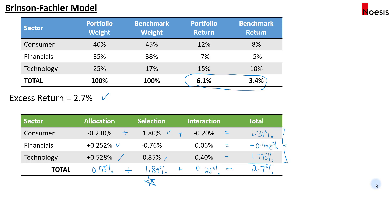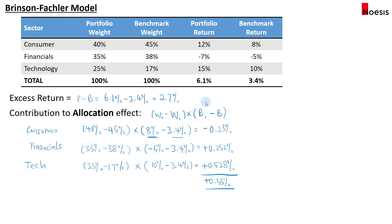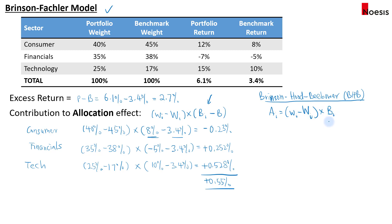There are two different Brinson models in the syllabus: the Brinson-Fackler model and the Brinson-Hood-Beebower (BHB) model. The difference lies in the calculation of the allocation effect. In the BHB model, the allocation effect is (portfolio weight minus benchmark weight) multiplied by the benchmark sector return alone — it does not subtract the overall benchmark return from the sector return. The Brinson-Fackler model is the primary focus, while the BHB model lays the conceptual foundation for understanding performance attribution.